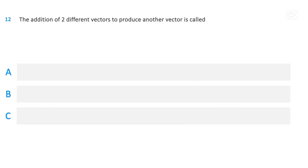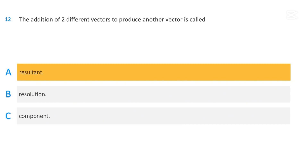The addition of two different vectors to produce another vector is called: resultant; resolution; or component. The correct answer is resultant.